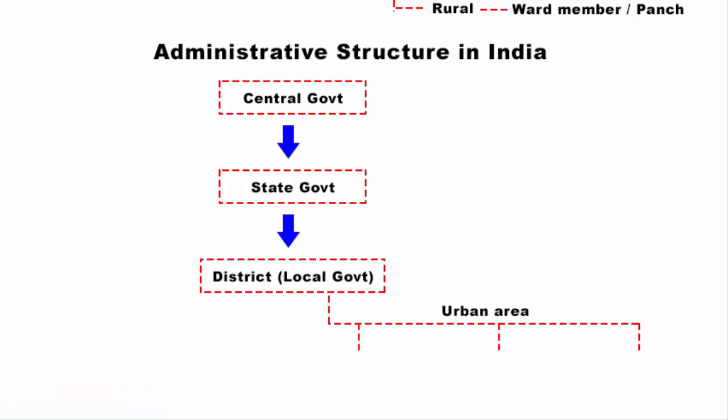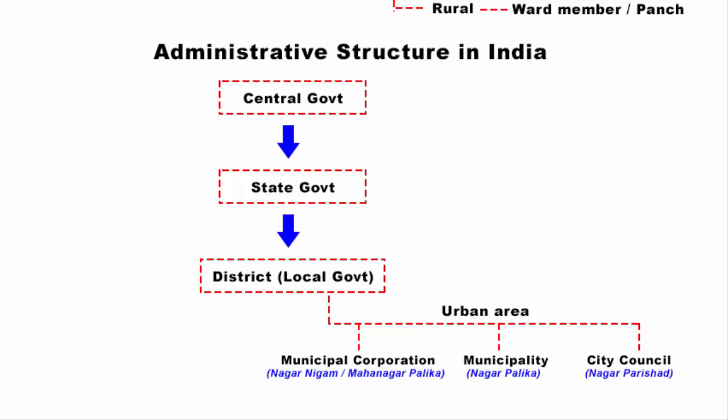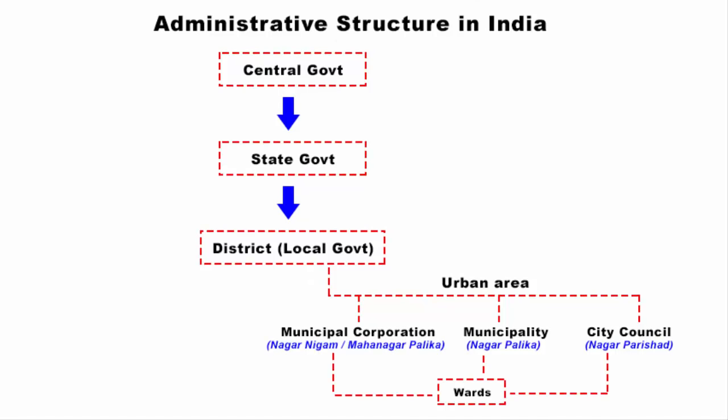In urban areas, the local governing body is a municipal corporation (Nagar Nigam), a municipality (Nagar Palika), or a city council (Nagar Parishad). These municipal areas are further subdivided into wards. One member is elected from each ward through direct election — they are called corporators. Together all these individual wards form a ward committee.